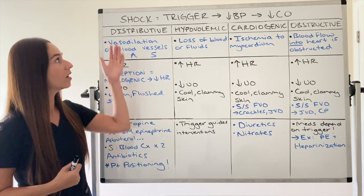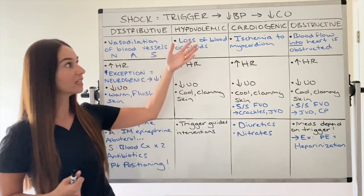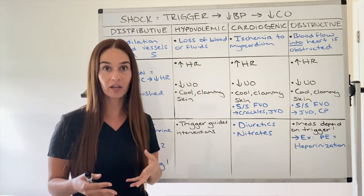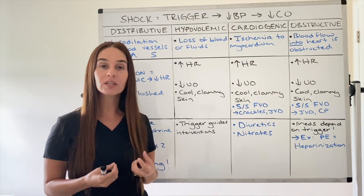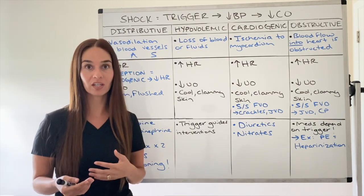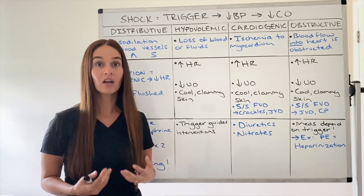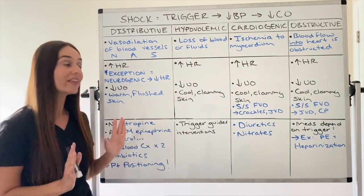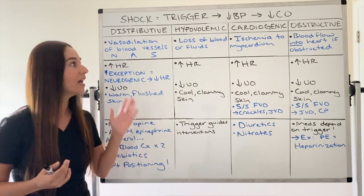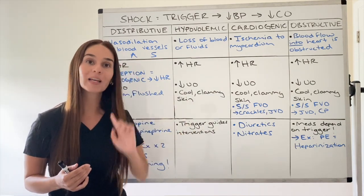There's a trigger that results in decreased blood pressure and eventually decreased cardiac output. With decreased cardiac output, we have less oxygen perfusing to our cells and tissues. In this video, my goal is that we can differentiate between the types of shock.